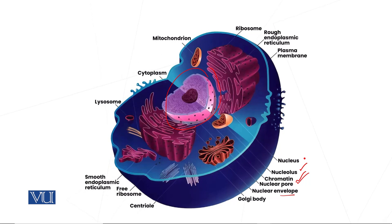In addition to that, we have mitochondria, endoplasmic reticulum, Golgi apparatus, and centriole. These double-membranous organelles are absent in the prokaryotic cell while they are present in the eukaryotic cell.